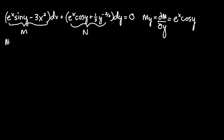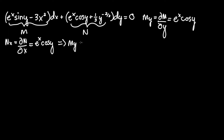Now let's move on to the partial derivative of N with respect to x, ∂N/∂x. We're focusing on the x terms. We have e to the x — the derivative of that is again e to the x — with a coefficient of cosine y, so the partial derivative is e to the x cosine y. The one-third y to the negative two-thirds has no x term, so that's zero. We have proven that M sub y equals N sub x, confirming that e to the x cosine y equals e to the x cosine y. Therefore, it is exact.